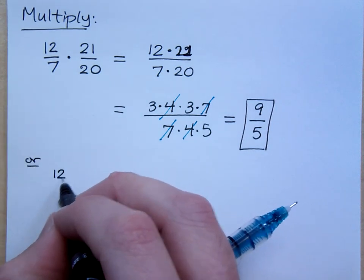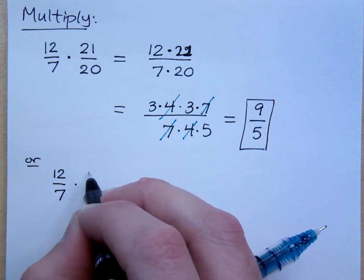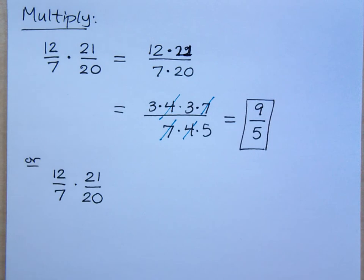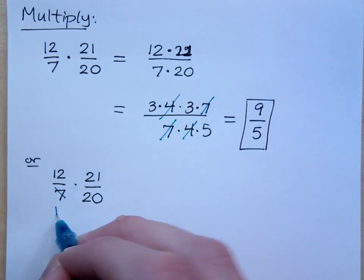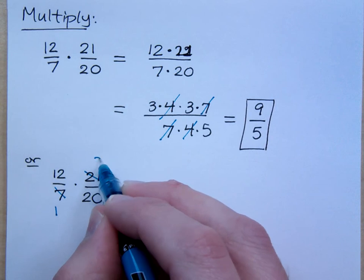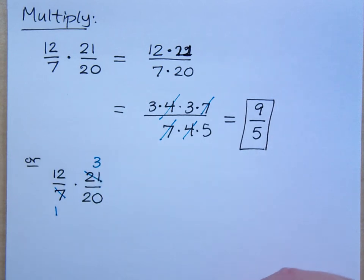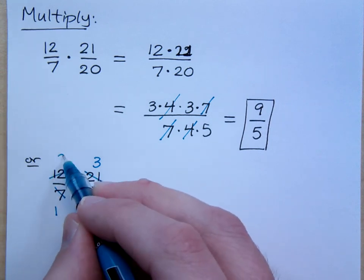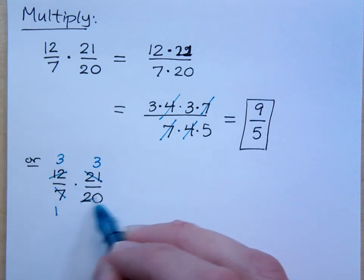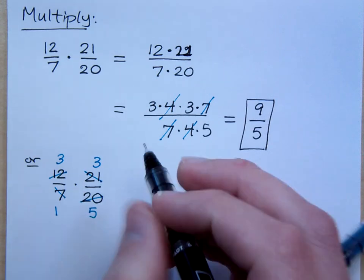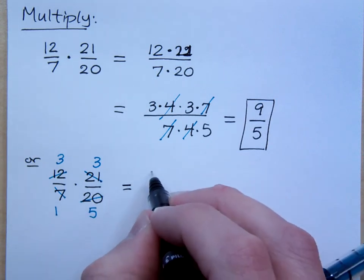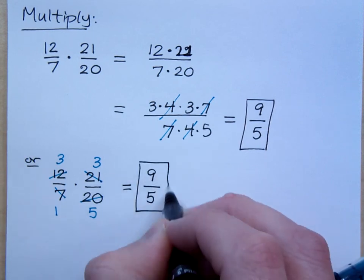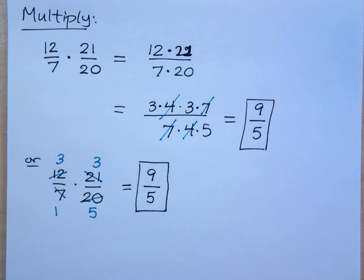The other way we have of doing this, and this is a little bit of a messier way, but this is how I'm sure a lot of you will do this. 7 goes into 7 once, 7 goes into 21 three times. And then you see that 12 and 20 have a common factor of 4. So 4 goes into 12 three times, 4 goes into 20 five times. And you know what? You still end up with the same answer, 9 over 5.